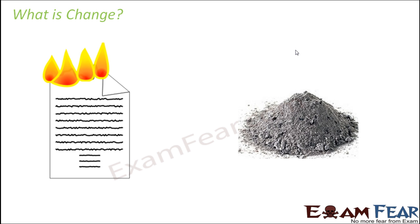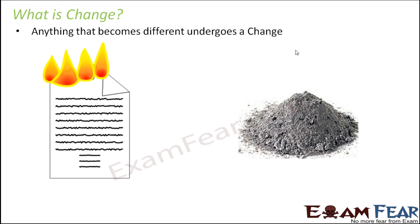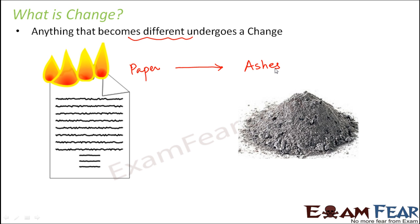So how do we define change? Change is anything that becomes different — anything that undergoes a change. Wherever you see something different, something new, that means a change has occurred. Take the example of a piece of paper — let's say you burn it. What would happen? Initially you had this piece of paper, and after you burn it, all that you will have is ashes. Once the paper is completely burnt, you will be left with ashes alone. Did you notice a change? Of course, a big change is being noticed. The ashes in no way are similar to the paper in shape, size, color, or texture — completely different. So a process has taken place due to which something different is formed, and that something different is the ash. So wherever you see something different happening, that means there is a change involved.